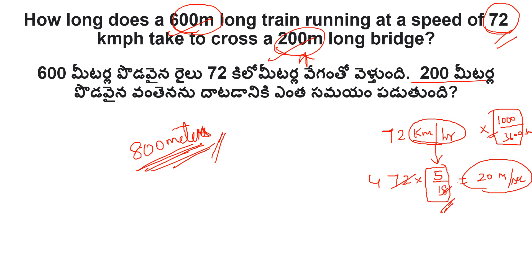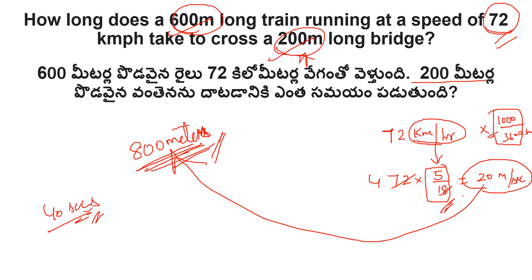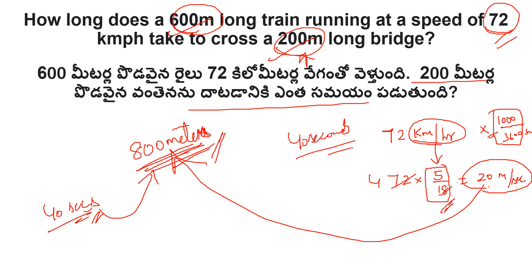Speed is 20 meters per second. Total distance is 800 meters. Time equals distance divided by speed, so 800 divided by 20 equals 40 seconds. The answer is 40 seconds.